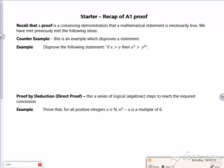Right, so it says a recap of A1 proof. Proof is a convincing demonstration that a mathematical statement is necessarily true. You might not have seen it before but you can give it a go.